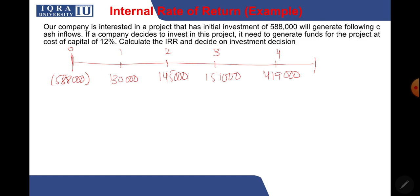If the company decides to invest in this project, it needs to generate the funds at a cost of capital of 12 percent. We are asked to calculate the IRR and make an investment decision. As already discussed, IRR is that point where NPV is zero.